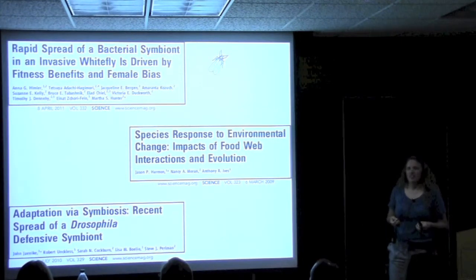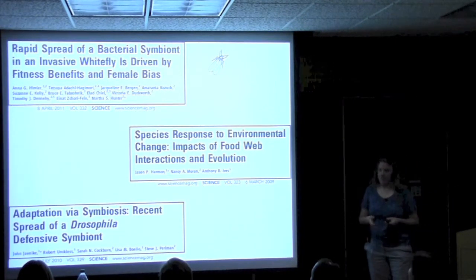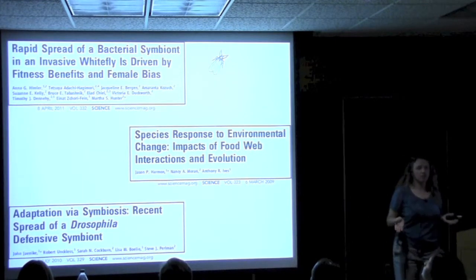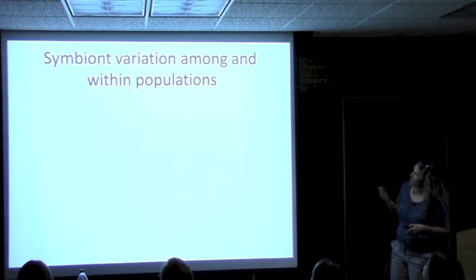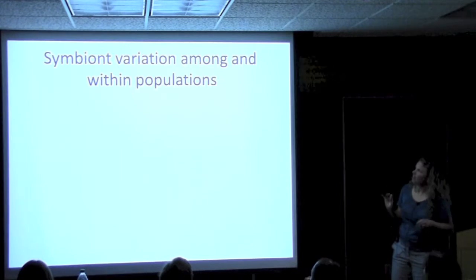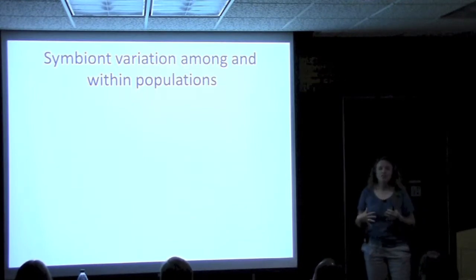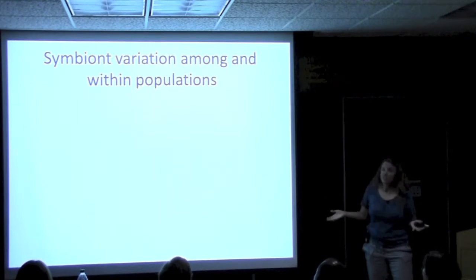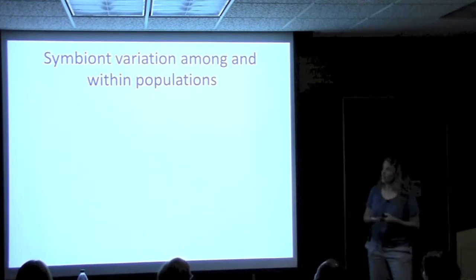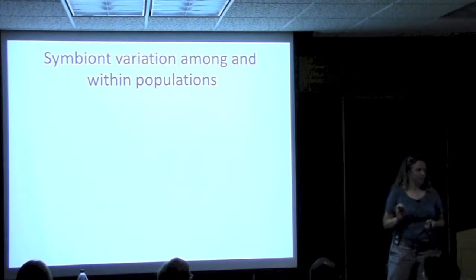What we don't know yet is how frequent a pattern this is. We know what happens, but is this common? Is it happening all the time and we've just never been looking for it, or are these really exceptional cases? I'm going to argue that we really need to understand a lot more about symbiont variation among and within populations as the first step, before we can make those later steps of understanding these evolutionary processes. The first thing you need is variation to even begin to see these effects.